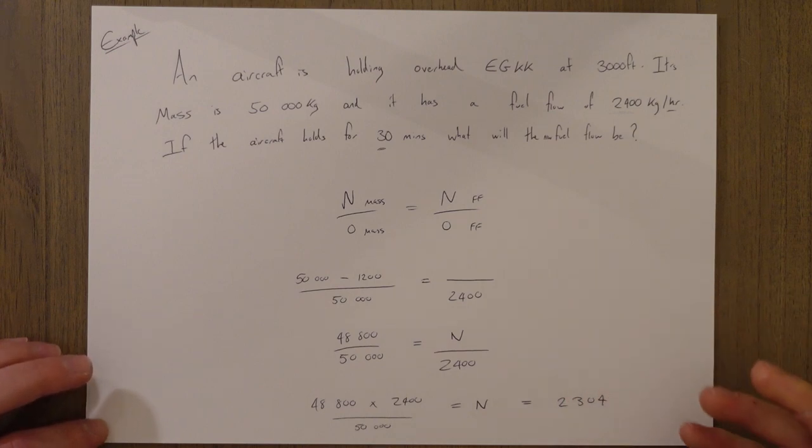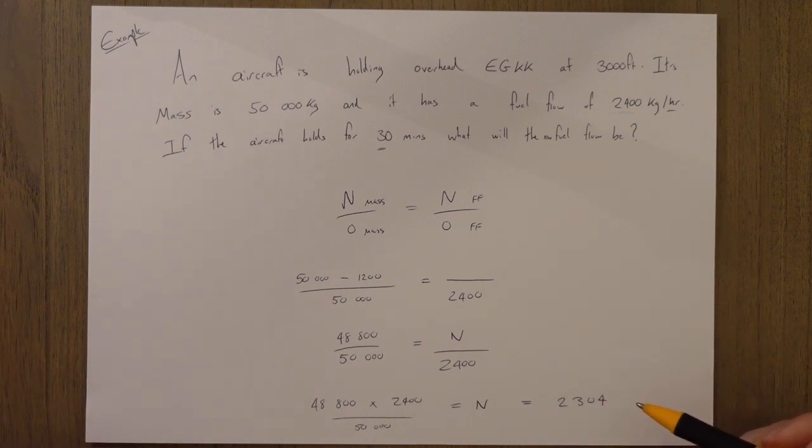48,800 times 2,400 over 50,000 equals our new fuel flow which if you put it into a calculator equals 2,304. It's not exact but it's a good estimation. So you know that as we get lighter we're going to burn less fuel. That sort of adds up.